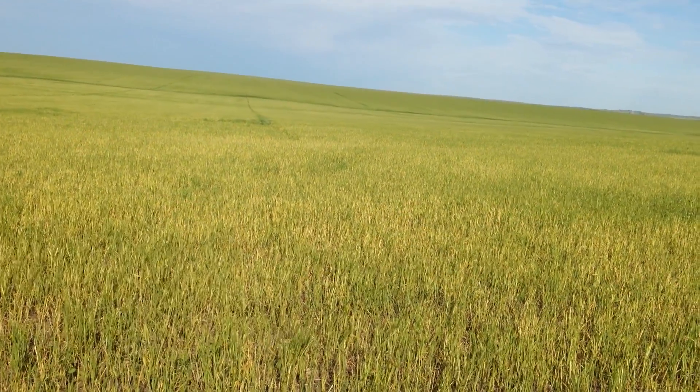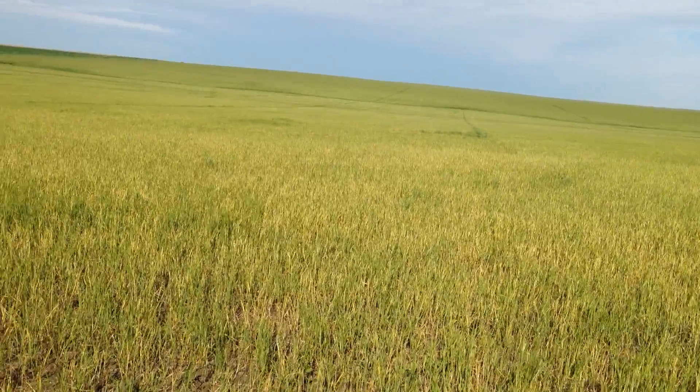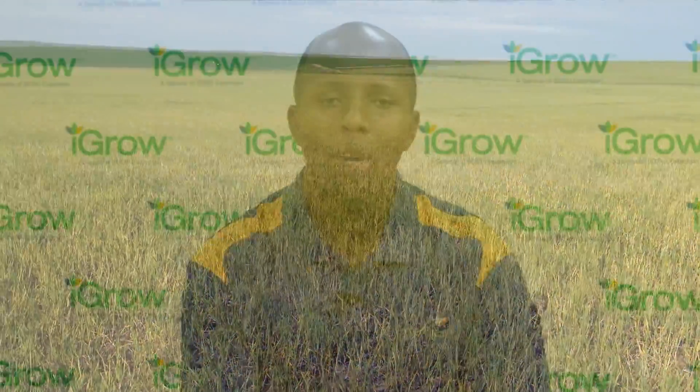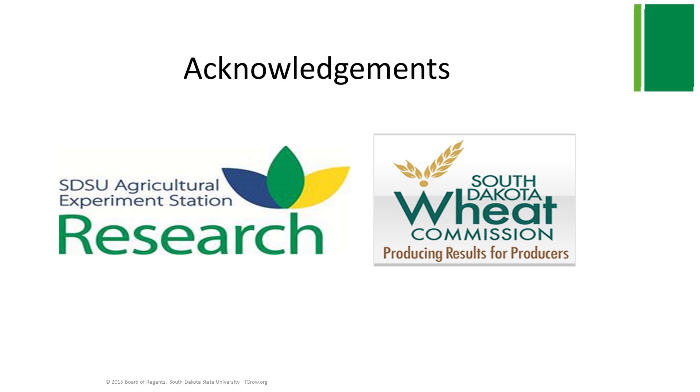This video talked about wheat streak mosaic disease and how it can be devastating on wheat. The disease is transmitted by wheat curl mites, and volunteer wheat and grassy weeds — which form the green bridge — are the main risk factor. To manage this disease, destroy the green bridge at least two weeks before planting, and practice crop rotation as well as planting resistant or tolerant cultivars. The Small Grains Research and Extension Program is sponsored by SDSU Ag Experiment Station and the South Dakota Wheat Commission.